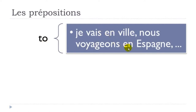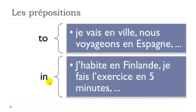Another use is 'in'. For instance, 'j'habite en Finlande' — 'habiter' is to live, so I live in Finland. Then 'je fais l'exercice en cinq minutes' — 'faire' is to do, so I do the exercise in five minutes. It's quite important: when you use 'in' here, it means the time you need to complete the exercise — not that you will do it after five minutes, but the duration it takes you.